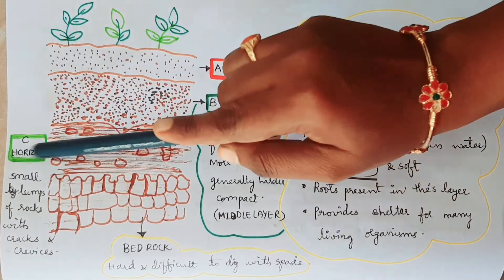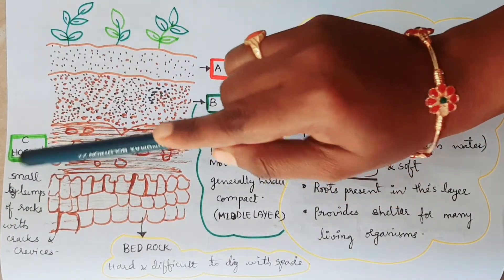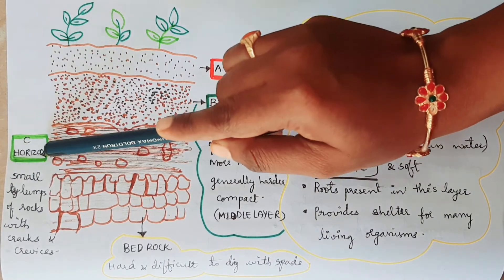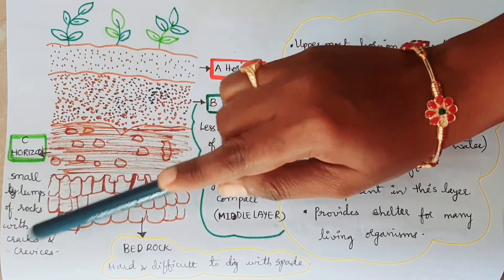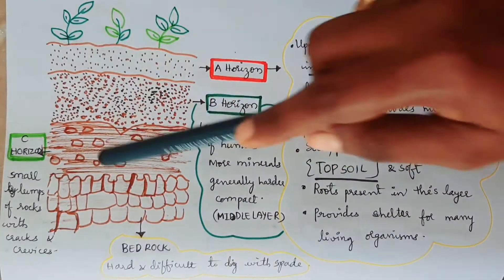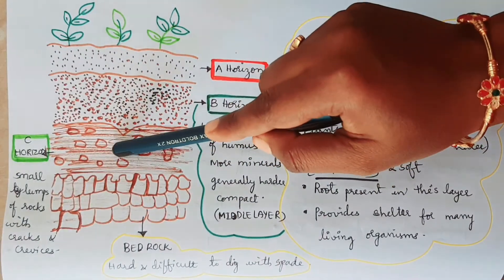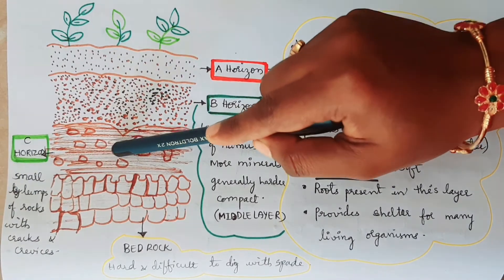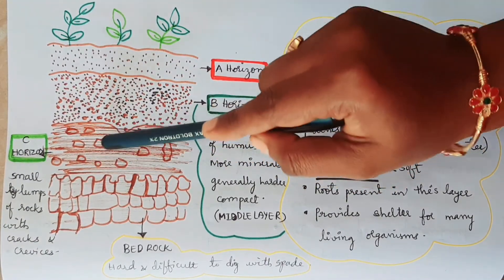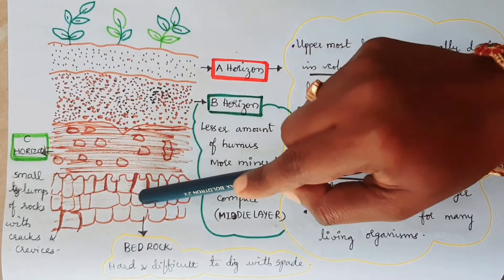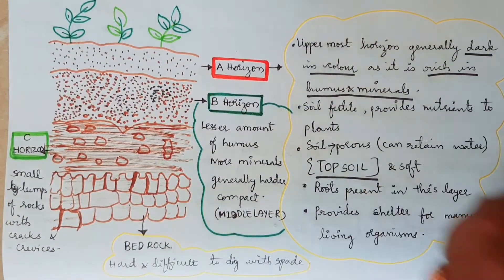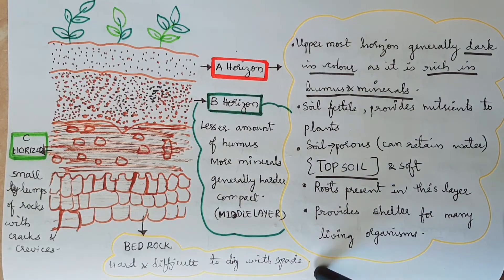Now we will look at C-horizon. In C-horizon, small lumps of rocks with cracks and crevices are present. Below C-horizon, the last and innermost layer is called bedrock. Bedrock is very hard and difficult to dig even with a spade.